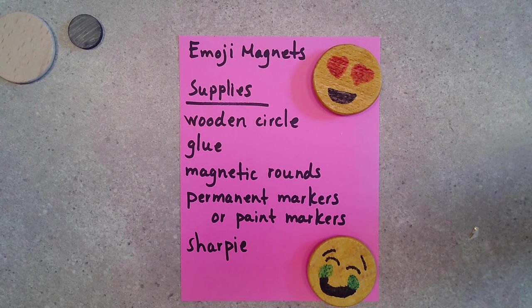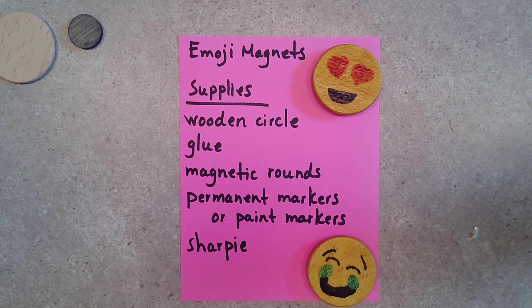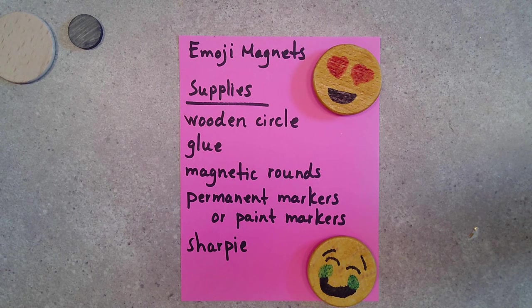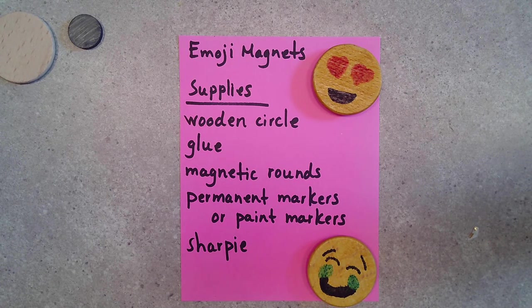So our second locker craft are these adorable emoji magnets. And like the washi tape clothespins, they are super easy and fun. So the supplies that you will need to make these are your wooden circles, glue, magnetic rounds, permanent markers or paint markers, and a Sharpie, unless you have a black permanent marker, which is essentially the same thing as a Sharpie.